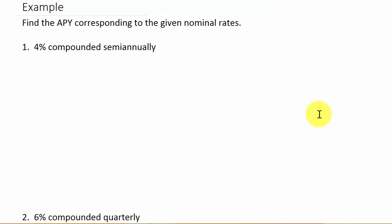Here it wants us to find the annual percentage yield corresponding to the given nominal rates. So, 4% compounded semi-annually. First, let's just go ahead and write our formula down. R sub E is equal to 1 plus R over M raised to the M minus 1. So we just need to know what R and M are.